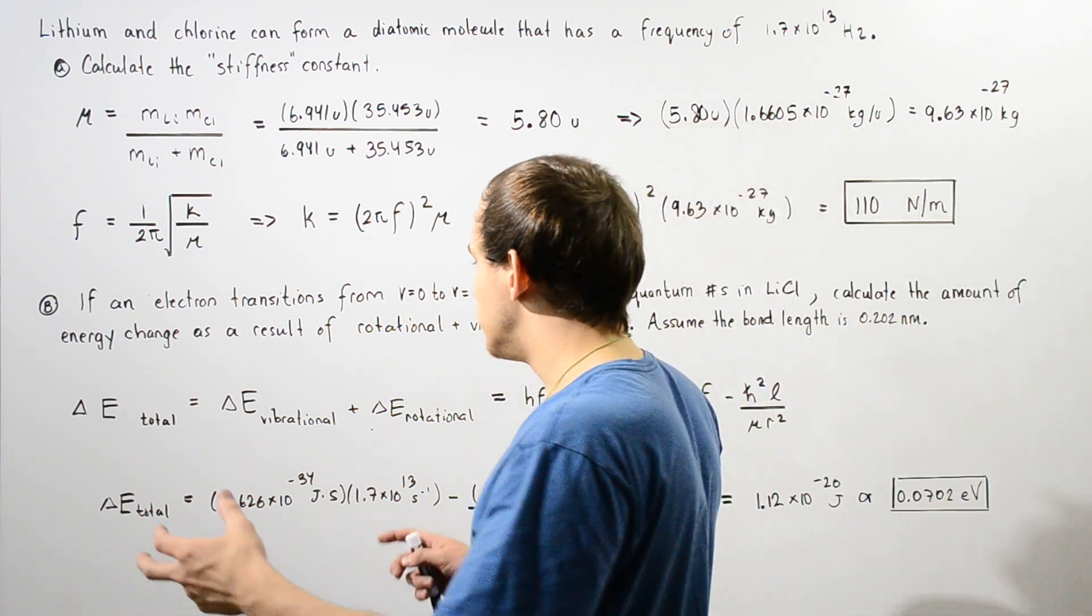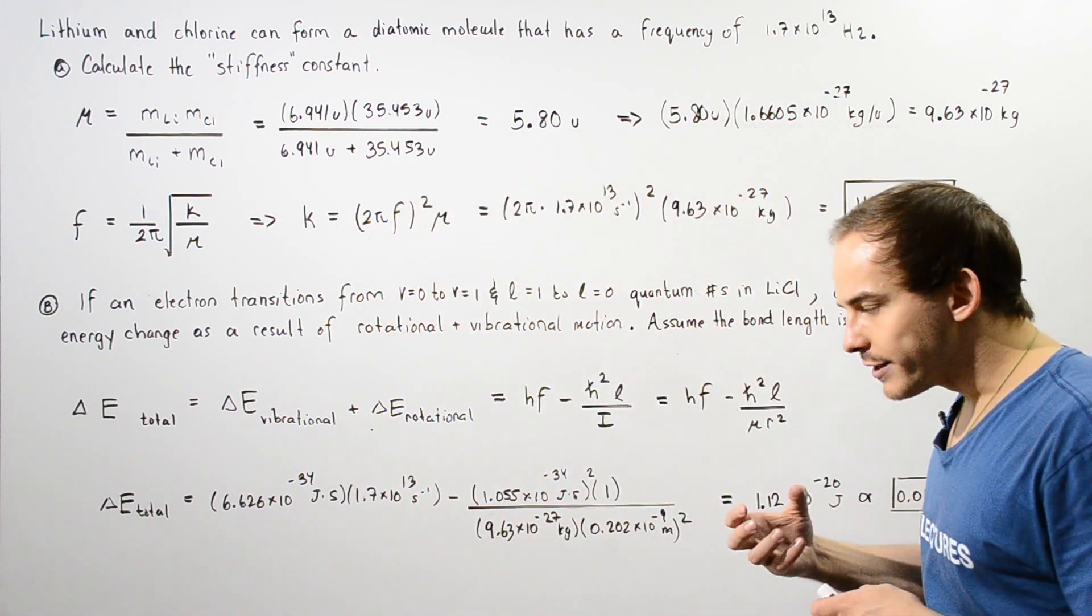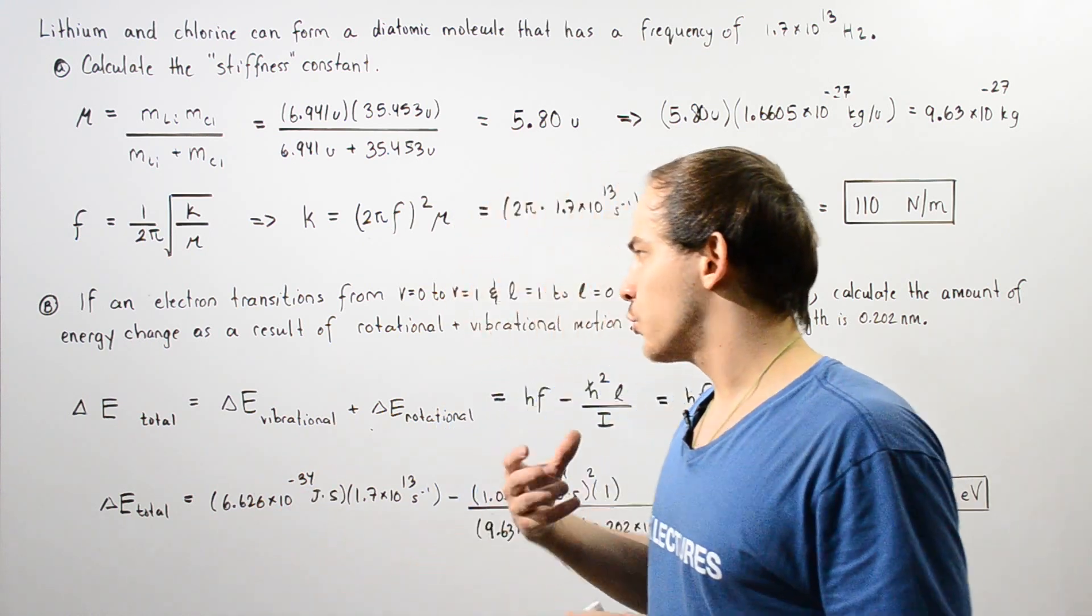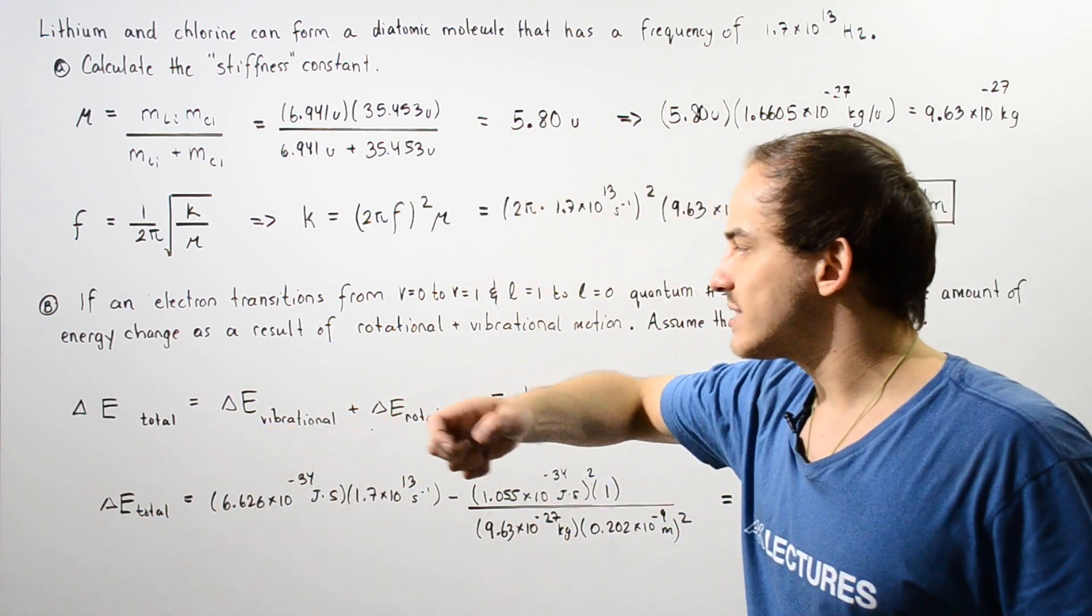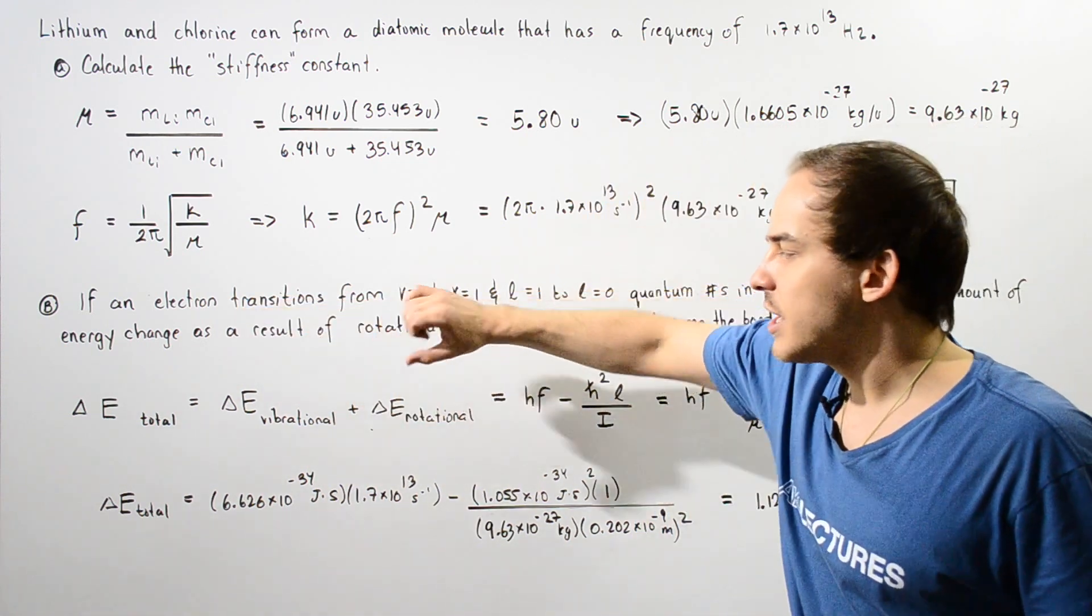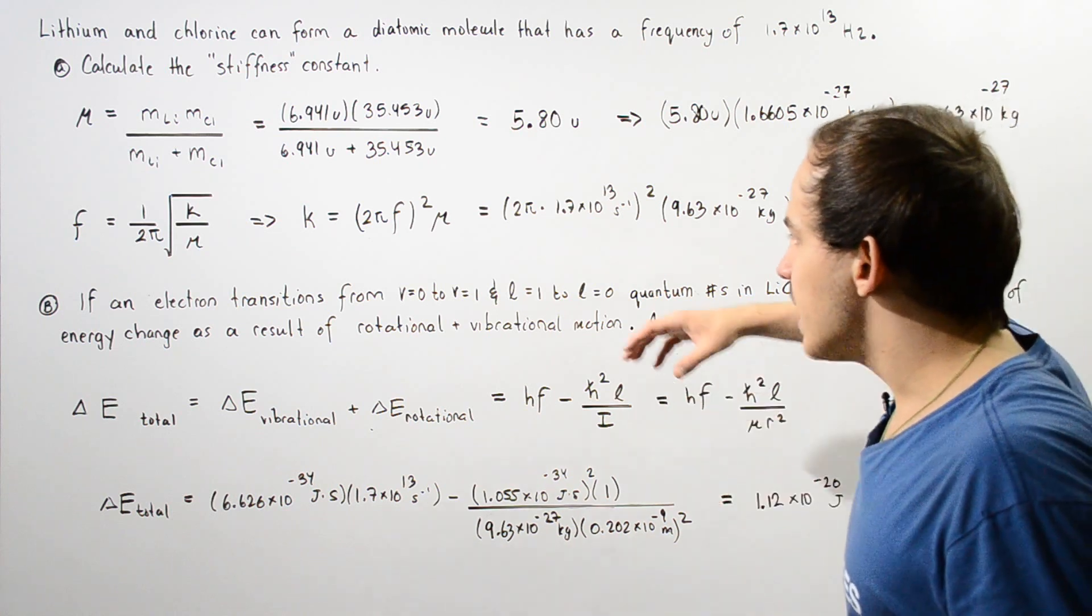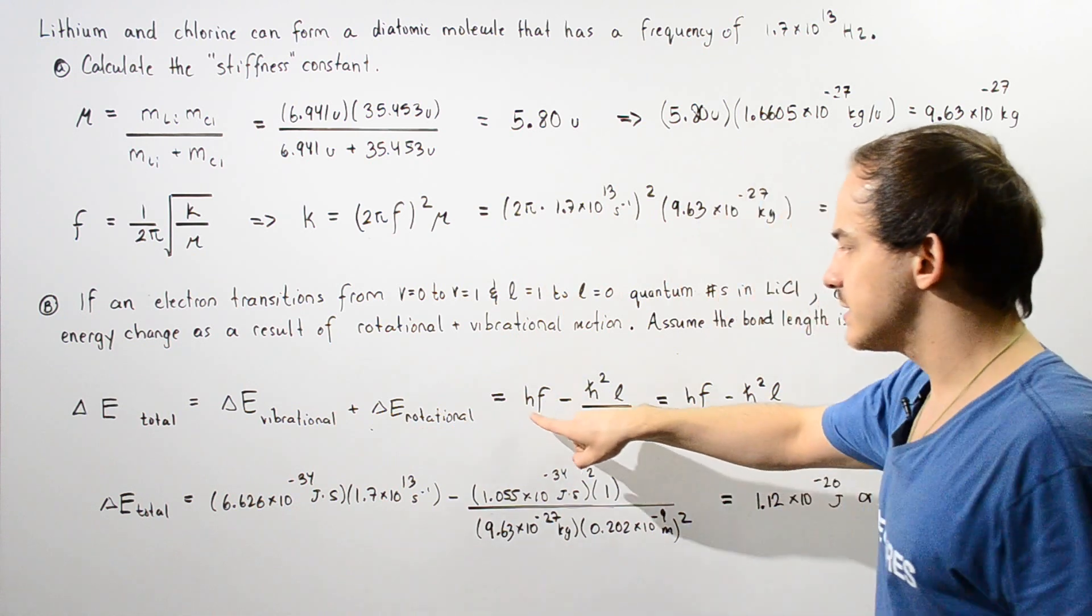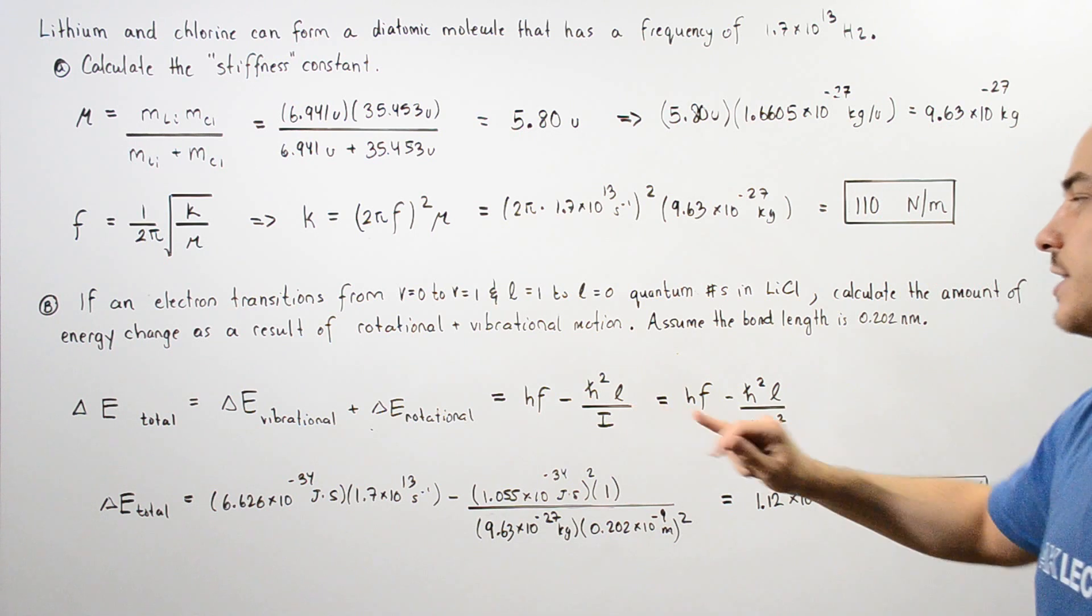We want to apply this equation. This equation gives us the total change in energy of our molecule that creates the electron transition. The total energy is a result of the change in vibrational energy plus the change in rotational energy. Because we're going through these transitions, our delta E vibrational is given by this quantity and the delta E rotational is given by this quantity.